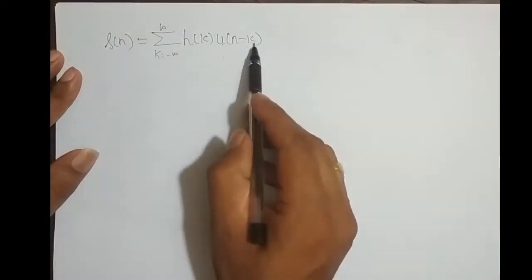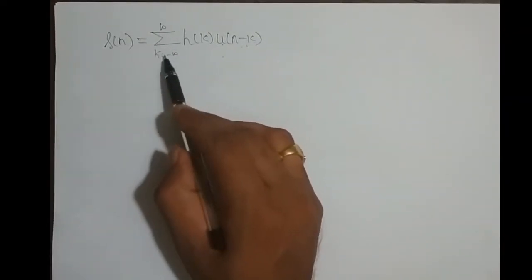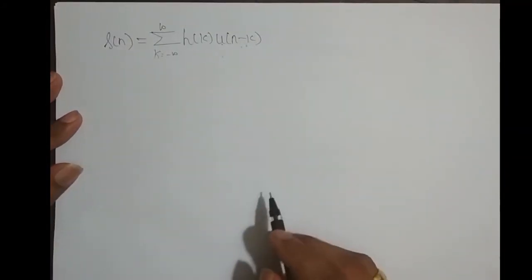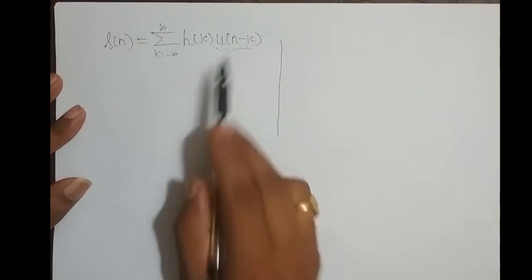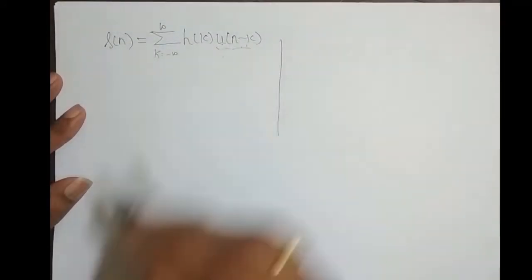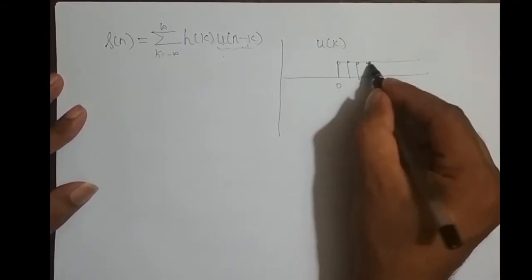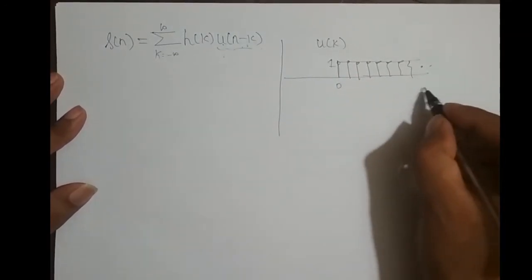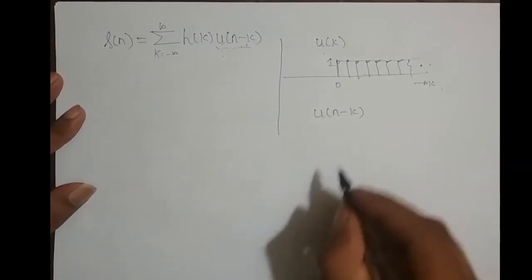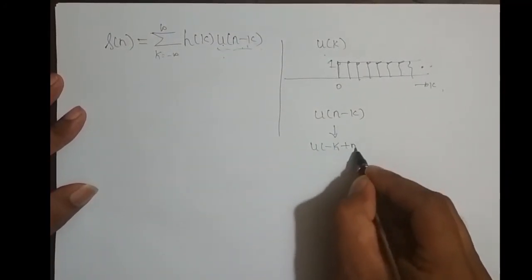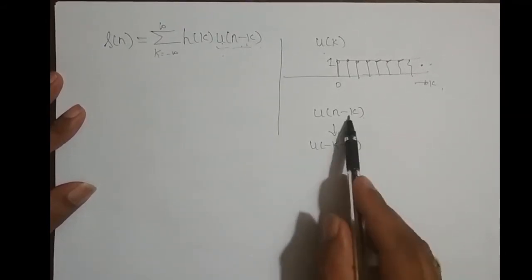Now I need to determine the range over which u(n−k) varies, so I can adjust the summation limits and drop the unit step function since its value is 1. The independent variable here is k, not n. So let's look at u(k): it starts from 0 and goes to infinity with amplitude 1. To find u(n−k), I rewrite it in standard form as u(−k+n), bringing the independent variable k to the front. This requires applying the precedence rule.